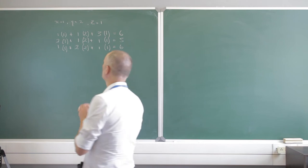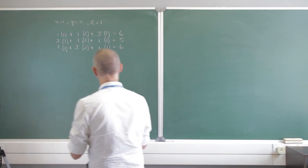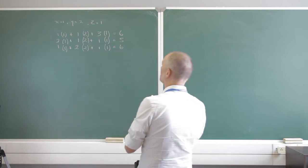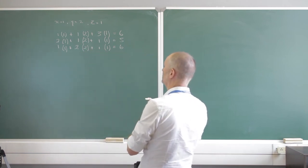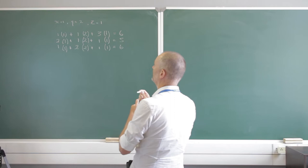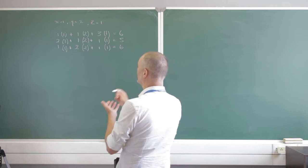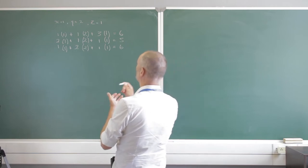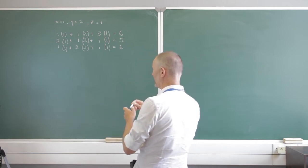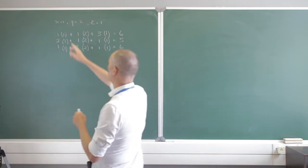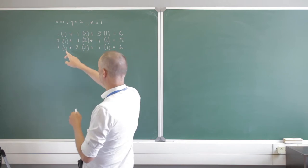Once again, I'm going to create my own three equations and three unknowns. I'm going to decide x is 1, y is 2, and z is 1. And I'm just going to represent them there.